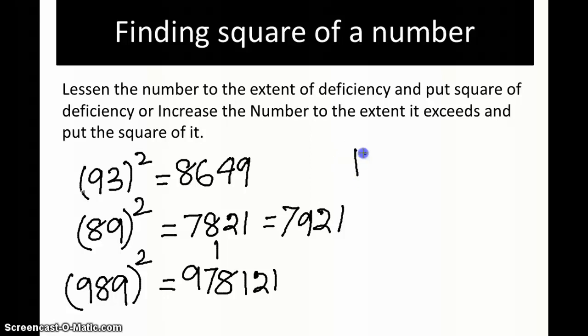Let's find out something for a number which is more. Consider the case of 109 squared. Here the second part of the rule comes into picture: increase the number to the extent it exceeds the base.